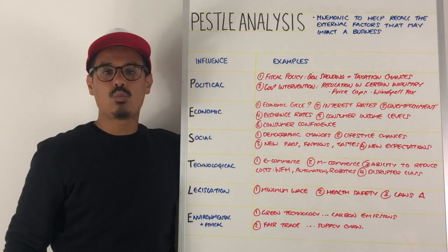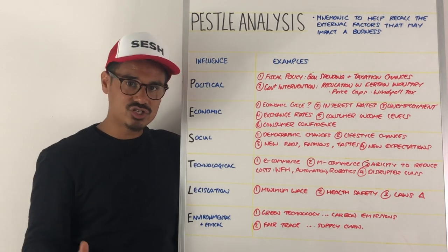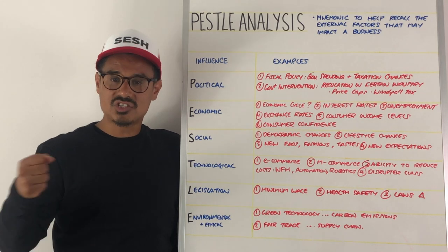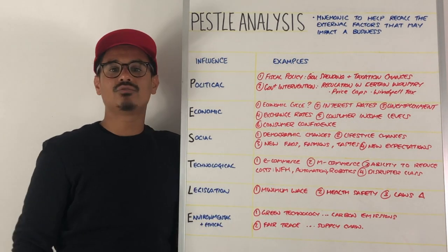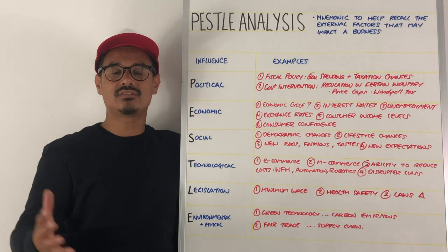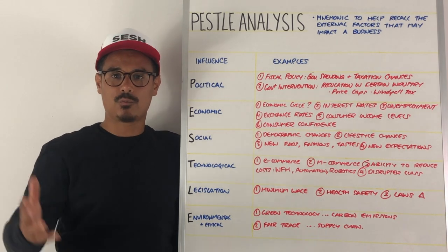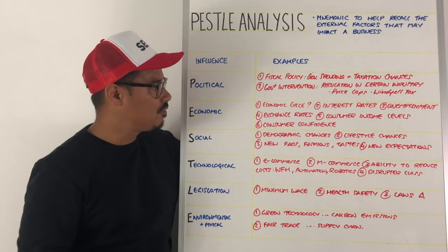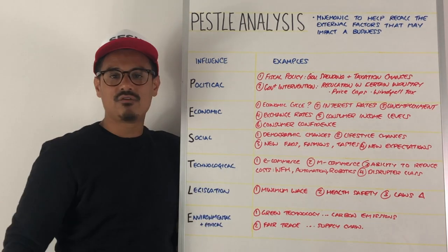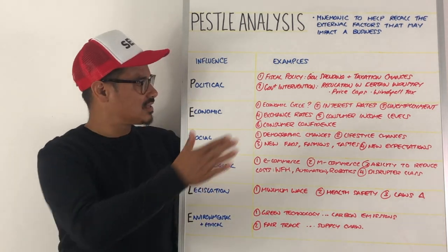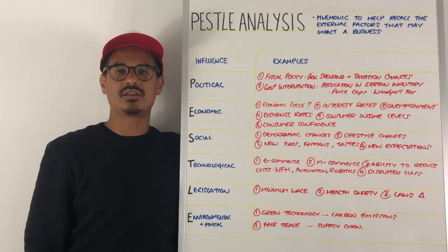Consumer incomes are another factor — are income levels increasing or reducing? That will affect spending on certain businesses. If consumer income levels are increasing, you want to think about the income elasticity of demand for your products, and the reverse if they are falling. Number six is consumer confidence and business confidence — where is that right now? These are clearly economic issues.